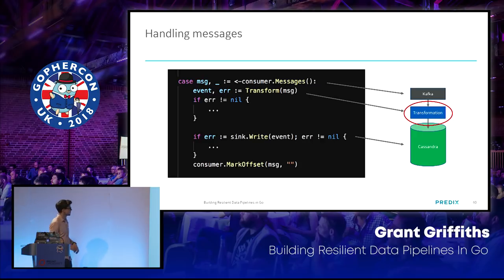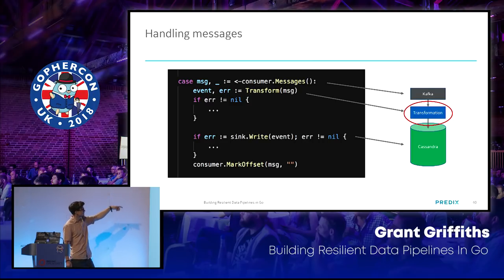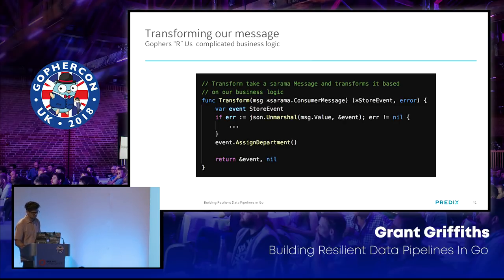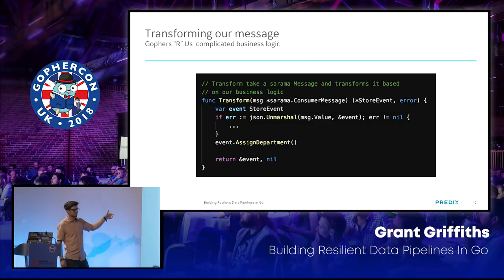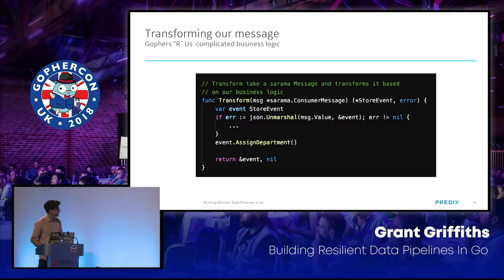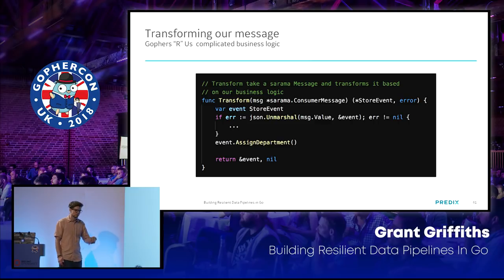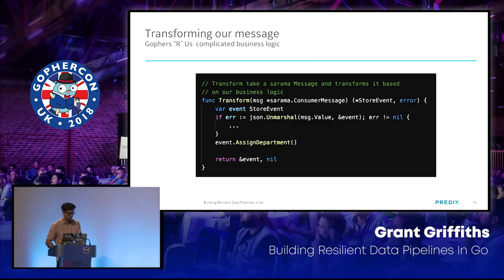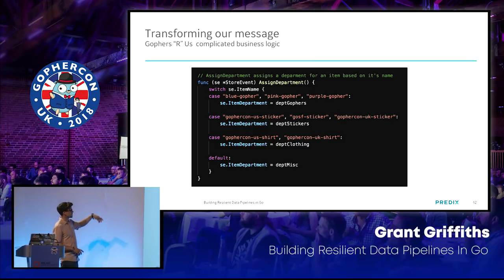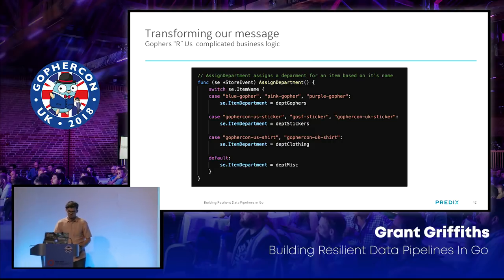For transformation, it's very simple. You read from the messages channel and get the raw data from Kafka. You pass it to your transform function, which returns an event. You get a store event and unmarshal the raw data from Kafka into your event struct — the event struct can hold any type of data you want. For example, we want to assign a department to the message as it comes in, since it could be any type of purchase: a gopher, a sticker, a T-shirt, et cetera. Obviously very important business logic, and it's good that this is a resilient data pipeline so none of this data gets lost.